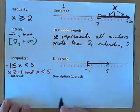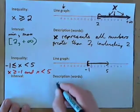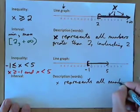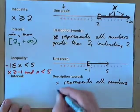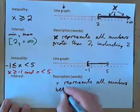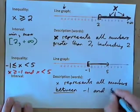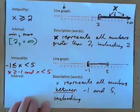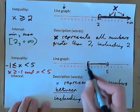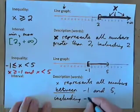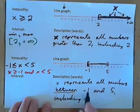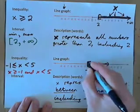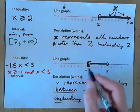Let's do the description. x represents all numbers between negative 1 and 5, including negative 1. 'Between' means everything in between negative 1 and 5 — not the endpoints themselves — so we use the word 'including' to specify that one of the boundary points is included.